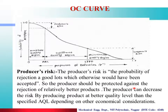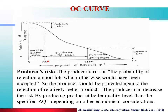The producer should be protected against the rejection of a relatively better product. The producer can decrease risk by producing at a better quality level than the specified level, depending on economical considerations. If the quality produced is higher than the consumer's acceptable quality level, that is all about the producer risk.